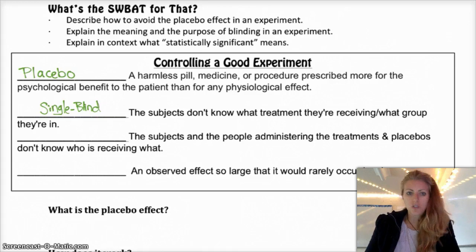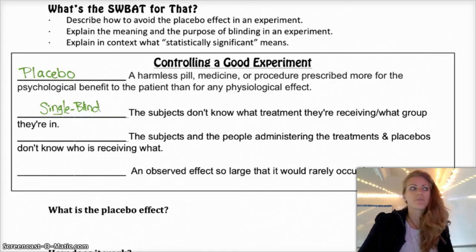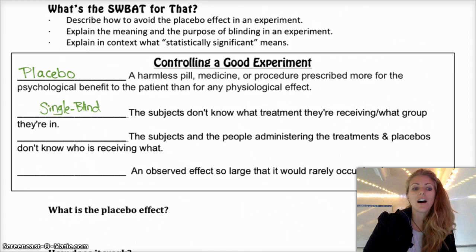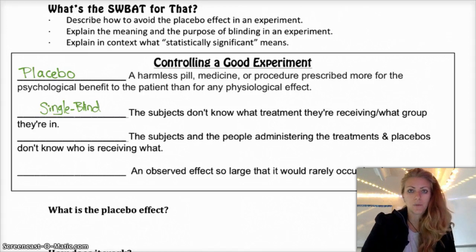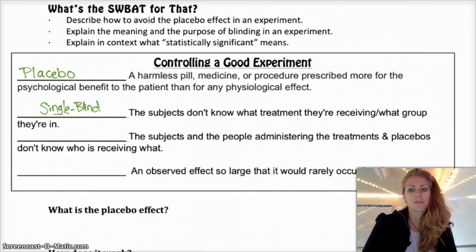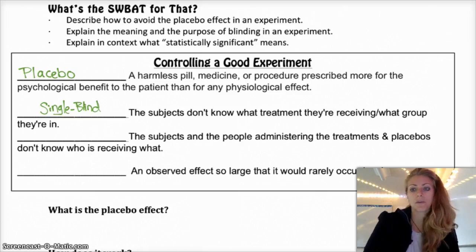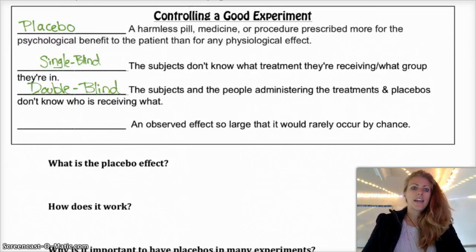Double blind experiments are usually quite helpful, though not always possible depending on what you're doing. But it's typically something you would want in an experiment.